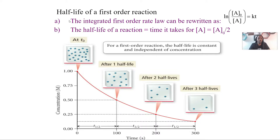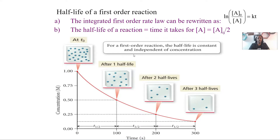Now let's talk about half-lives of first order reactions. We can take the integrated rate law and rearrange it to: ln([A]₀/[A]) = kt. The half-life of a reaction equals the time it takes for the concentration to fall to half of its initial value. For a first order reaction, the half-life is constant and independent of concentration.